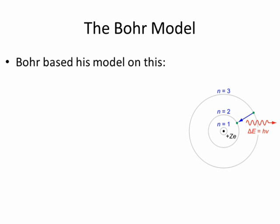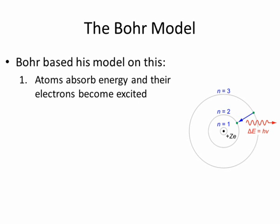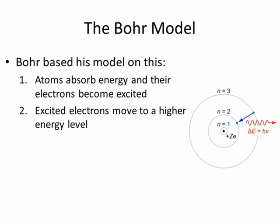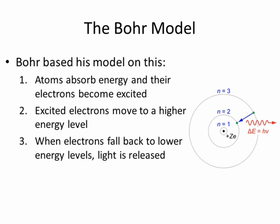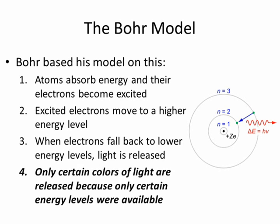The Bohr model shows a few specific things. Since atoms absorb energy and their electrons become excited, the excited electrons can rise to higher energy levels. When these excited electrons fall back down to lower energy levels, they release light. Since only certain colors of light are released, that shows that only certain energy levels are available. That's what we saw with the hydrogen bright lines.